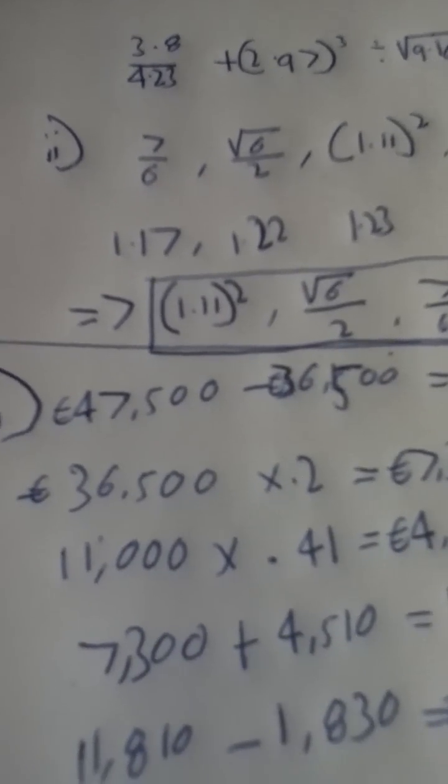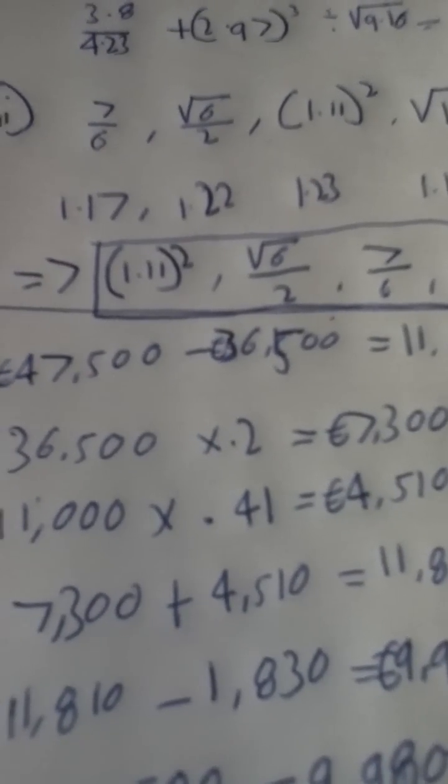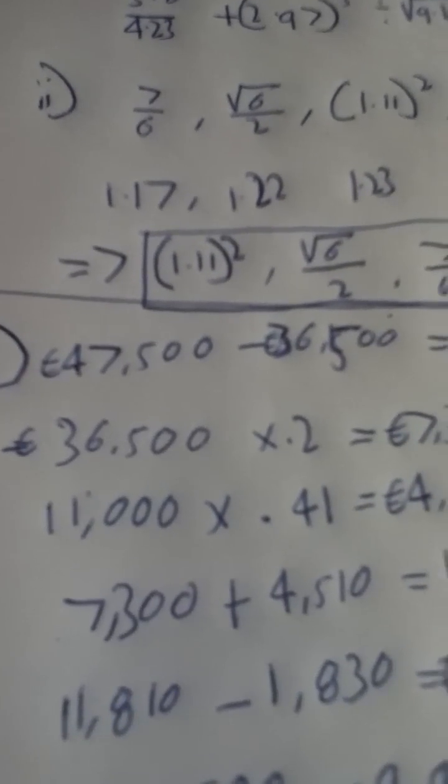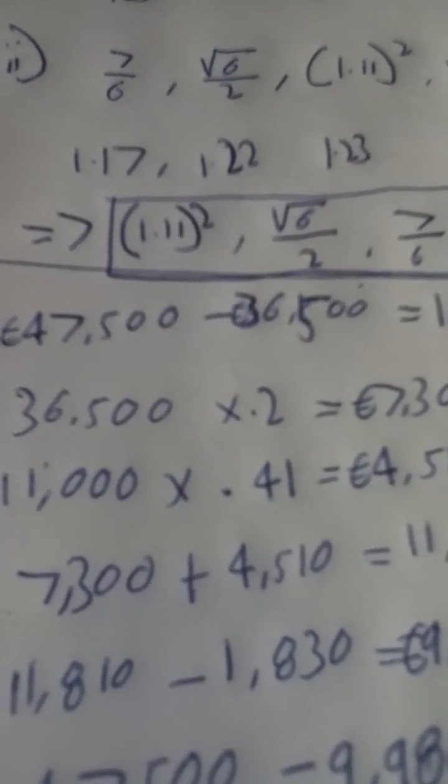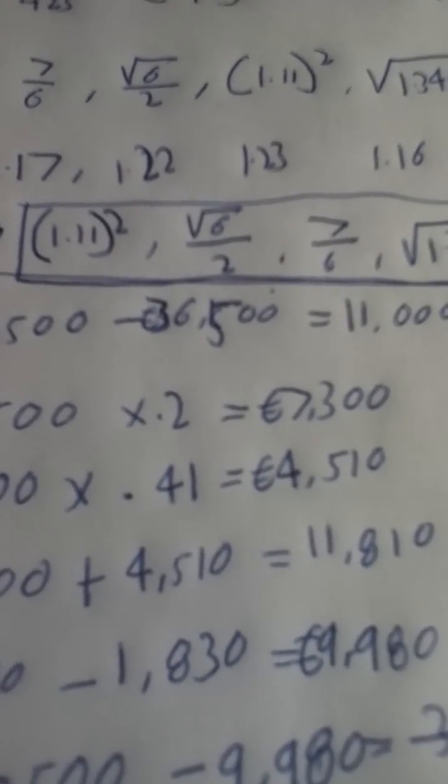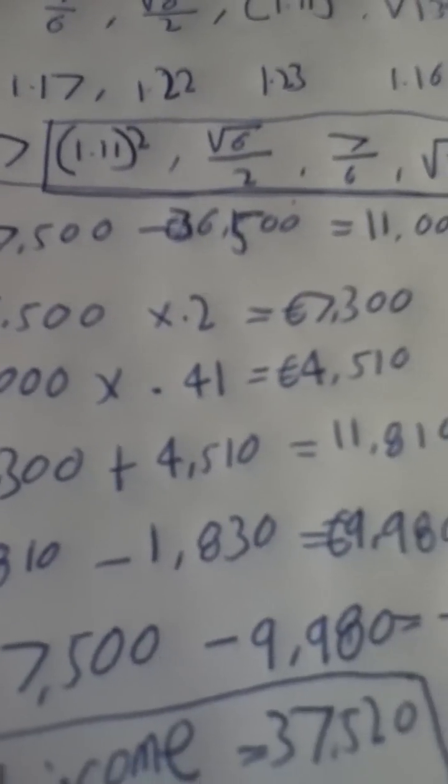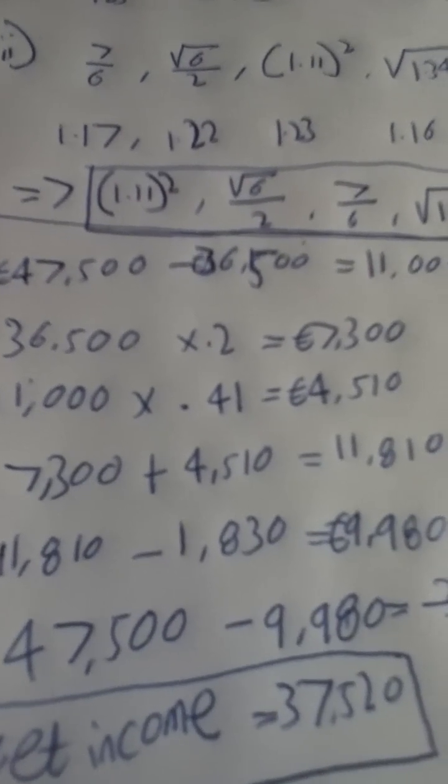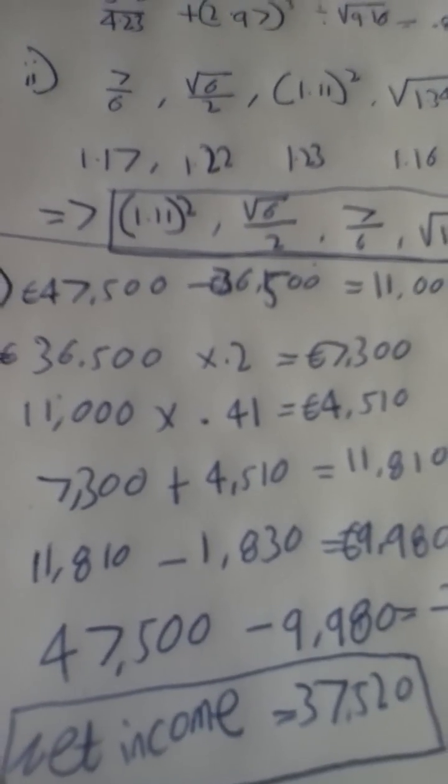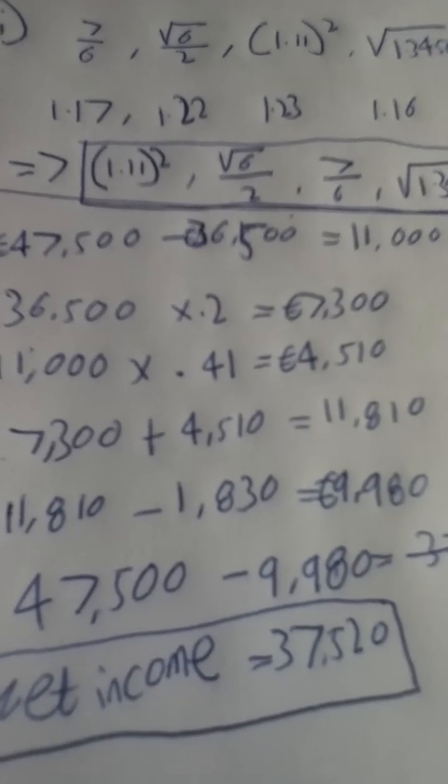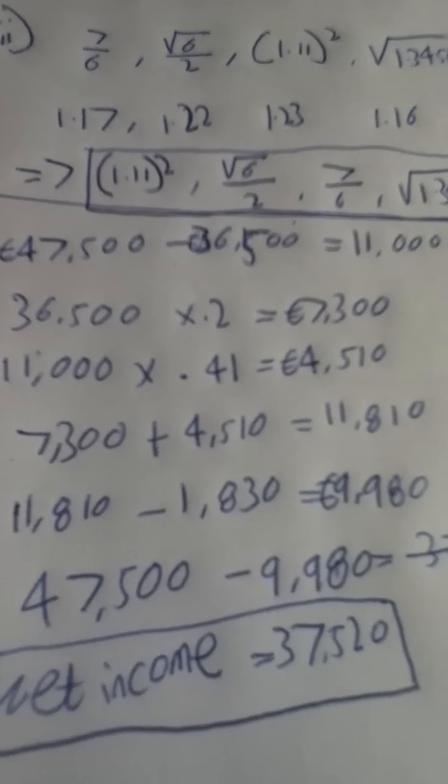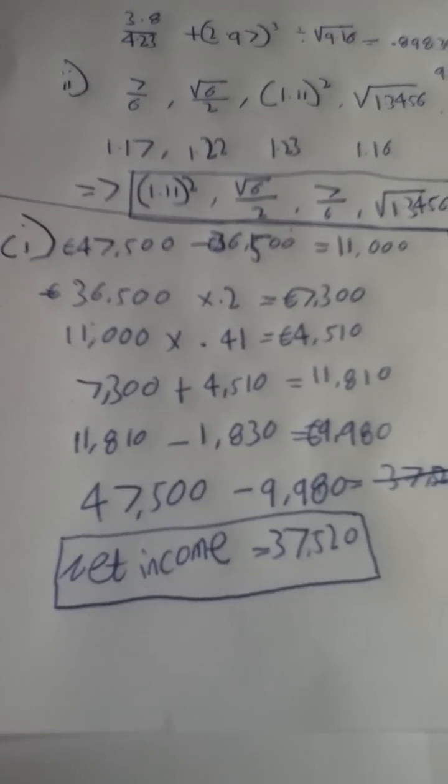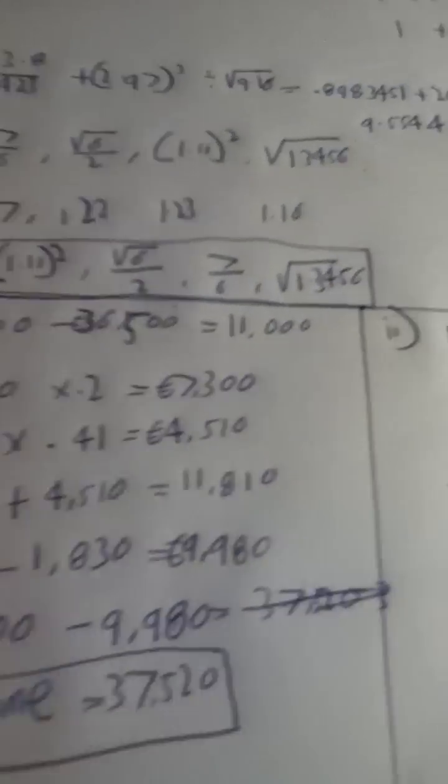And the lower rate is 20%. So you multiply 36,500 by 0.2 for 7,300 euro. Then 11,000 at the higher rate which is 0.41 will give you 4,510 euro. If you add them together you get 11,810. Then 11,810 minus 1,830 gives you 9,980. And 47,500 euro gross income minus 9,980 gives you a net income of 37,520 euro.